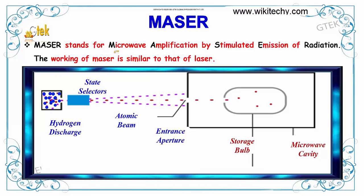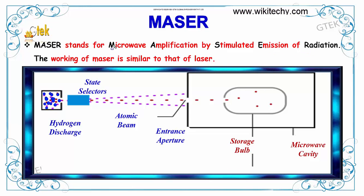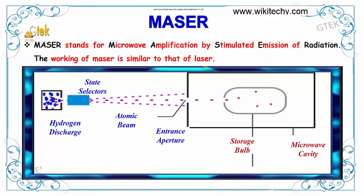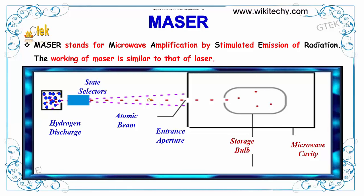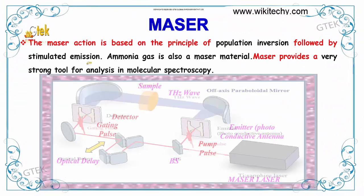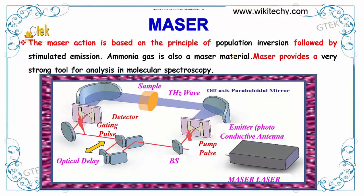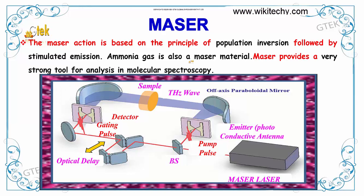MASER stands for Microwave Amplification by Stimulated Emission of Radiation — M-A-S-E-R. The working of a maser is similar to the laser. It uses a hydrogen discharge with a state selector on the atomic beam, an entrance aperture, a storage tube, and a microwave cavity. The maser action is based on the principle of population inversion followed by stimulated emission. Ammonia gas is also a maser material, and the maser provides a very strong tool for analysis in molecular spectroscopy.